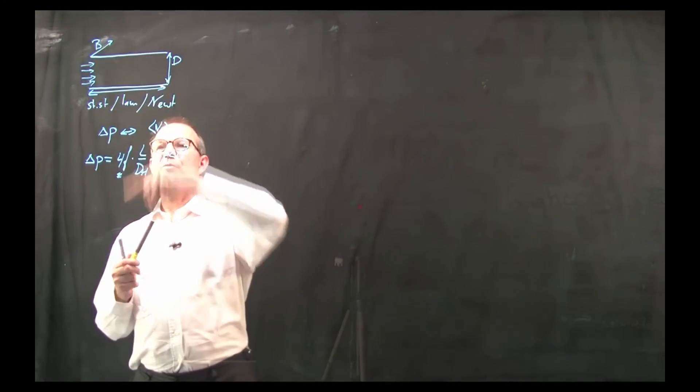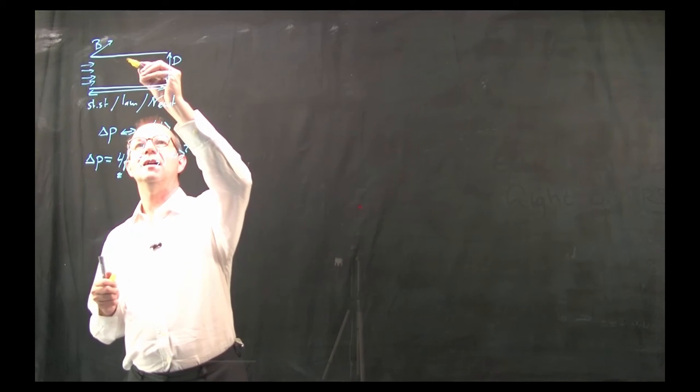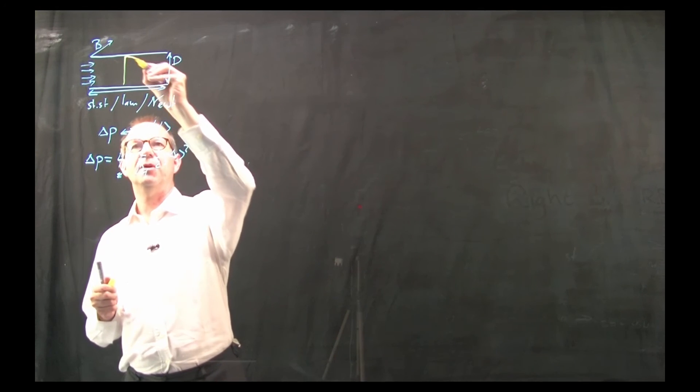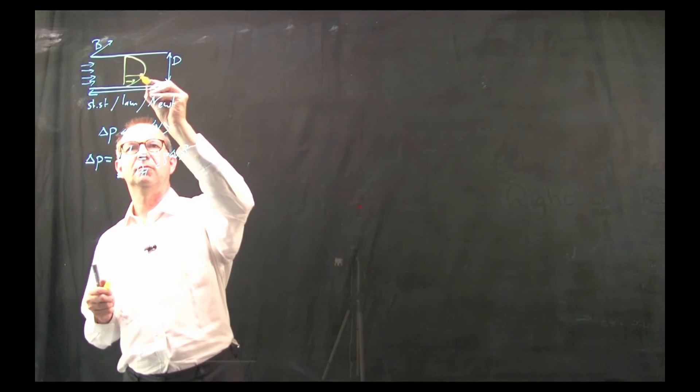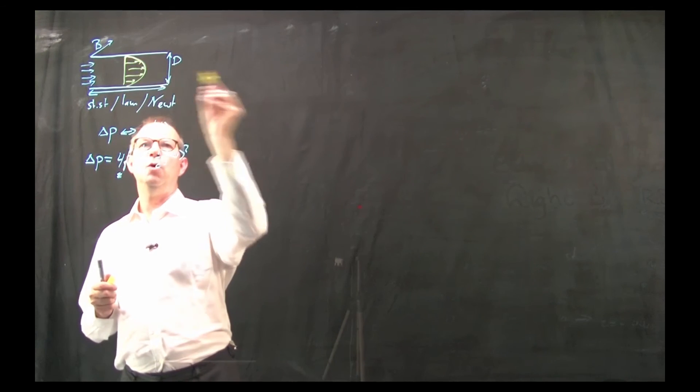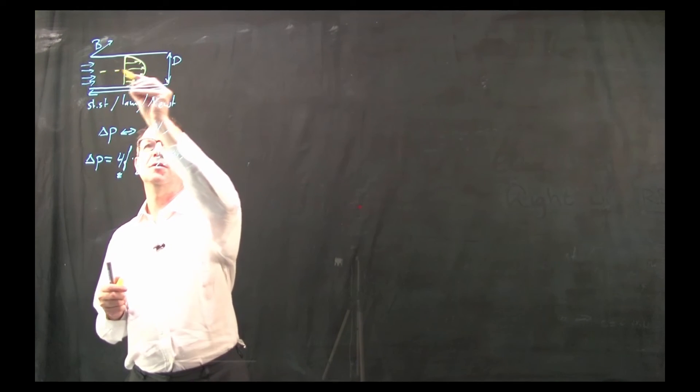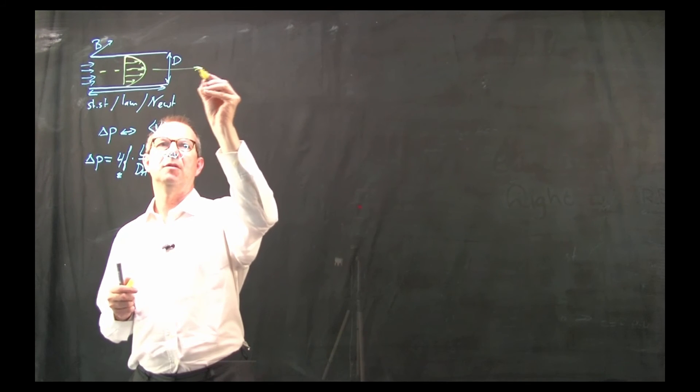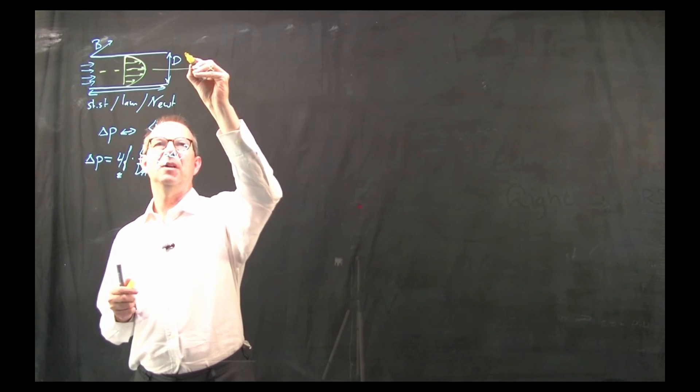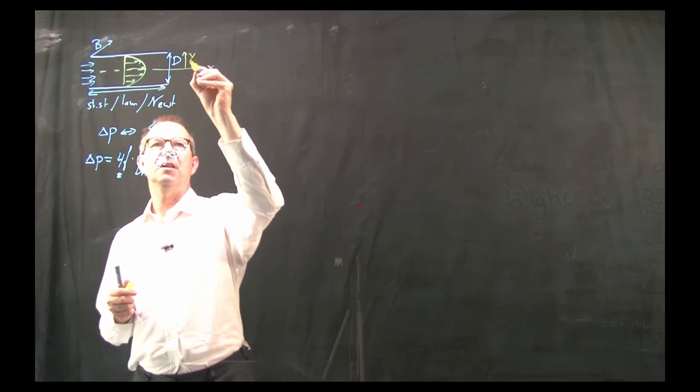What I need to find is the velocity distribution. And I can anticipate that it will look something like this. The flow will be in the x direction and it will have a variation in the y direction.